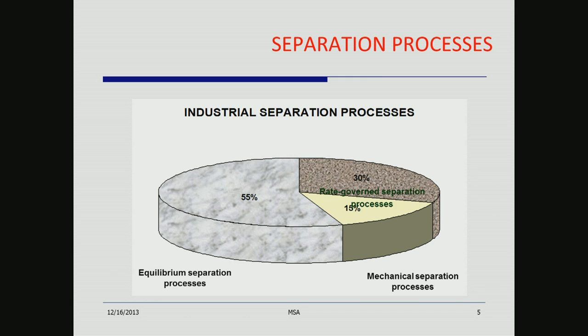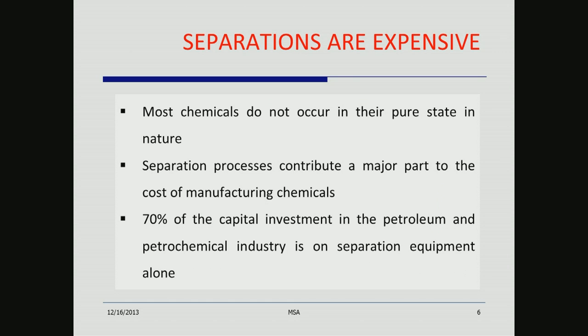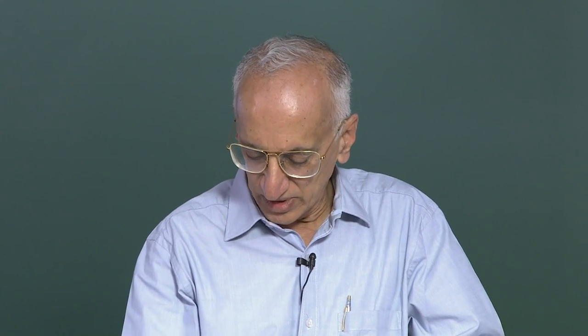The equilibrium separation processes can be basically designed on the basis of thermodynamics itself. Thermodynamics deals with equilibrium, and many of these processes operate so close to equilibrium that you can make quantitative predictions with thermodynamics. Separations are expensive — most chemicals do not occur in the pure state in nature. It is estimated that 70% of capital investment in the petroleum and petrochemical industry is on separation equipment alone.